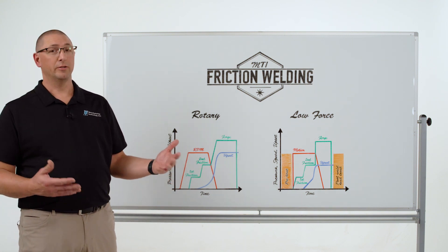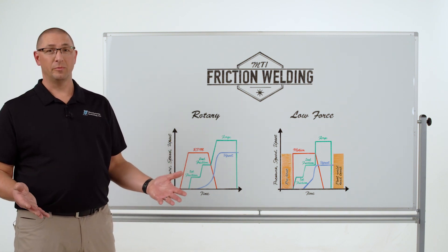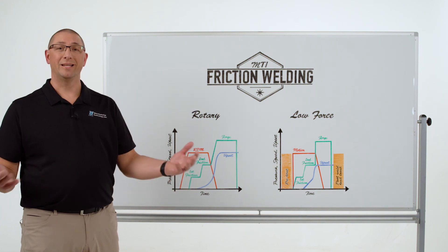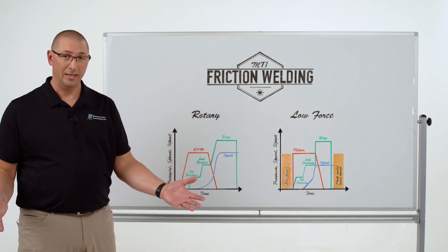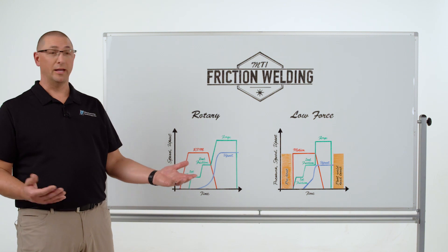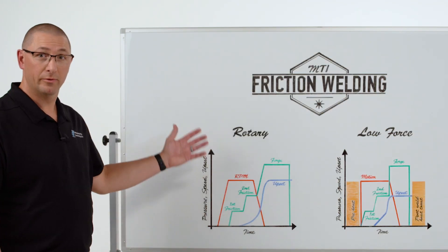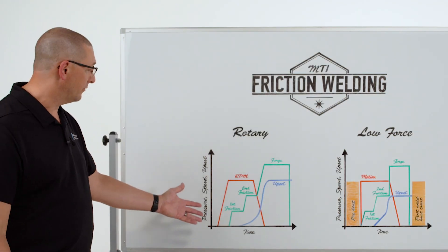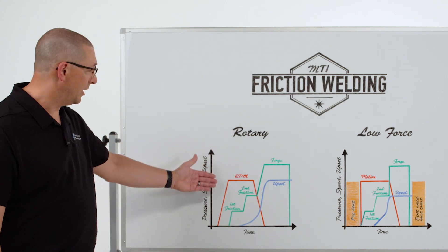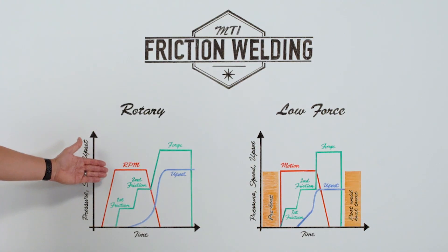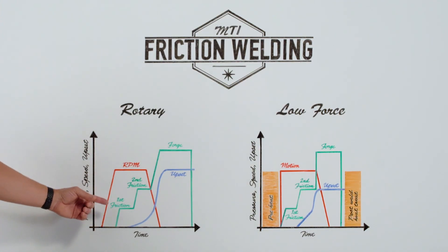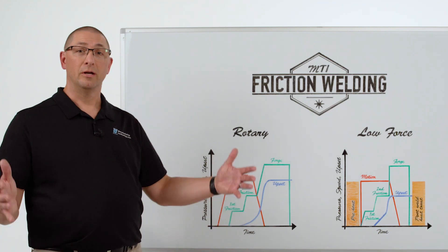In inertia welding, we actually use four times as much energy and twice as much load in order to get the energy in and make sure that we're not forming martensite at the end of the weld. I'll walk through the direct drive cycle. We're going to take the component that's rotating, bring it up to a speed — target RPM — and then bring on first friction pressure.